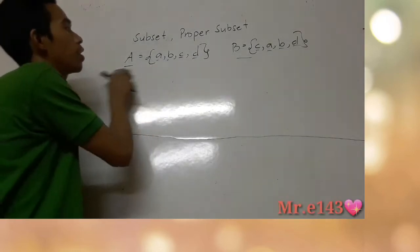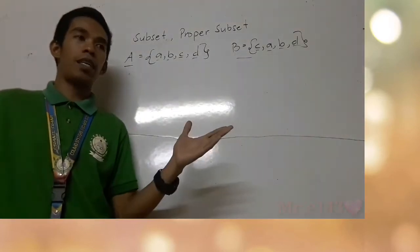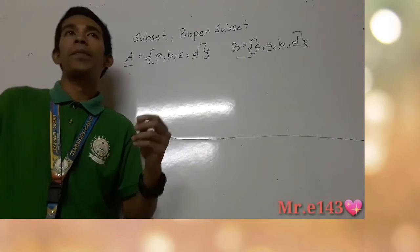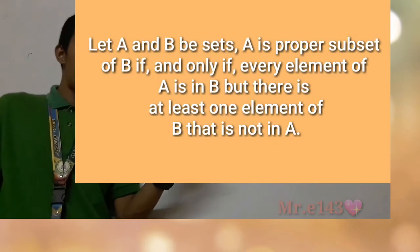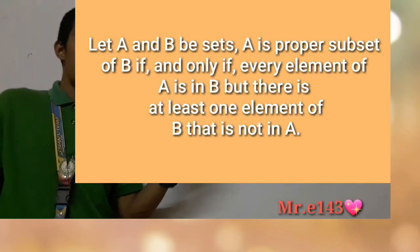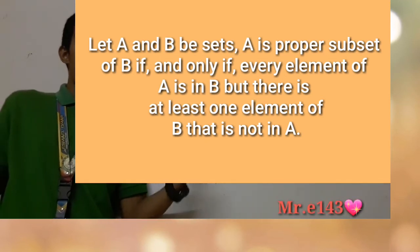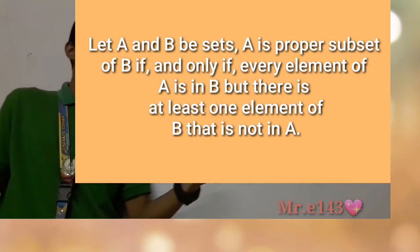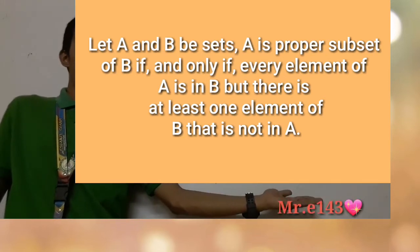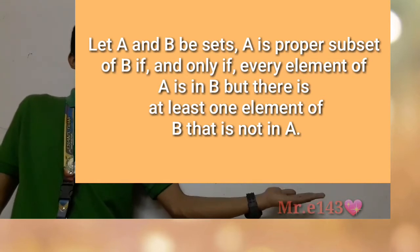Now let's move on to the proper subset. The difference between the two: for the proper subset, let A and B be sets. A is the proper subset of B if every element of A is also in B, but there is at least one element of B that is not in A.